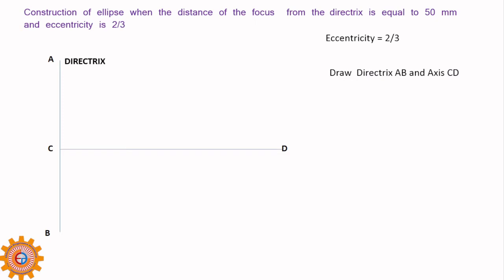Now there is a point called focus. The focus distance from the directrix means it is from the C. What is the distance of the focus F from C? It is 50 mm. That is given, 50 mm.